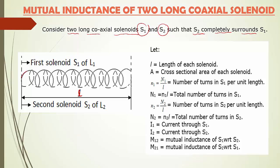We considered two long solenoids S1 and S2. Solenoid S1 is a long coil having N number of turns. Inside S1 there is one more solenoid S2. These two solenoids are completely filled with air. The length of both solenoids is denoted by L. The first solenoid is S1 having length L1, and the second solenoid is S2 having length L2.